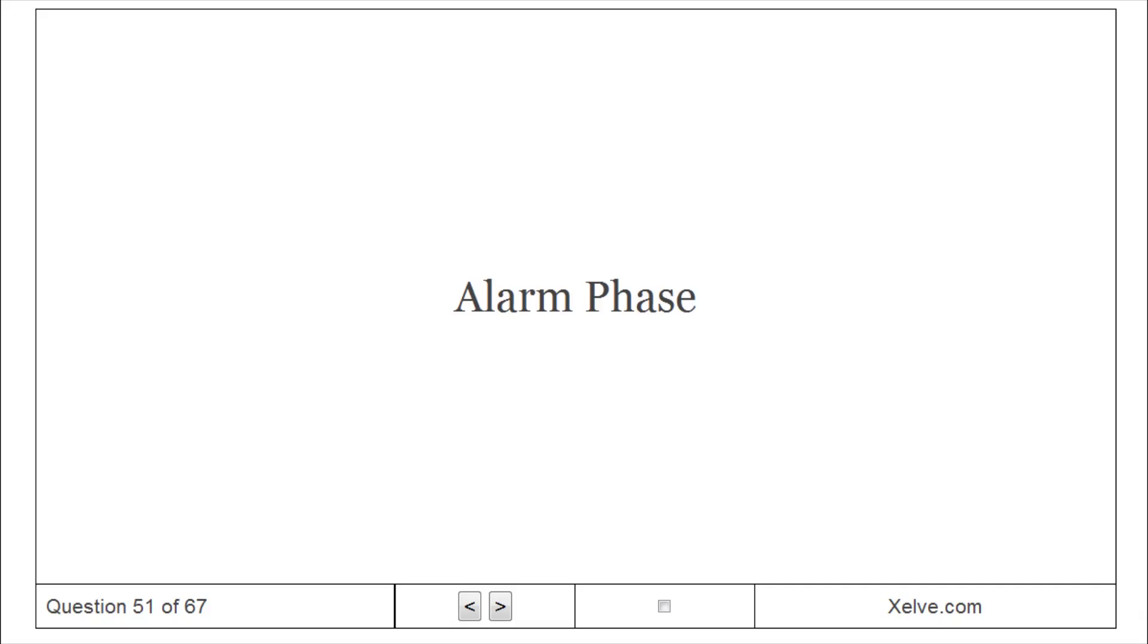Stress response phases. Alarm phase: sympathetic autonomic nervous system response. Resistance phase: glucocorticoid response. Exhaustion: organ system failure.